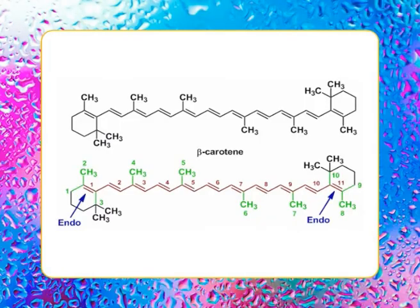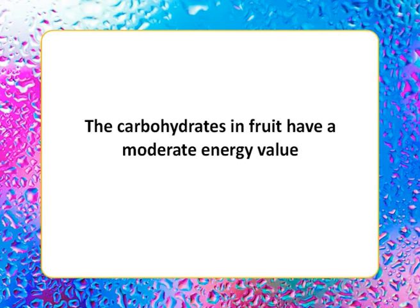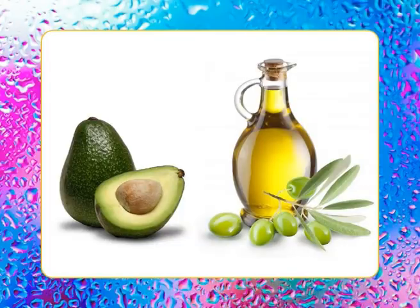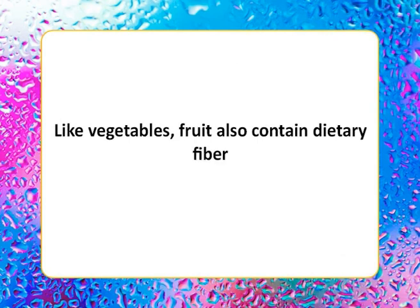Although most people do not consume an adequate amount of fruits and vegetables, in the United States more processed fruits and vegetables are consumed than their fresh counterparts. The primary source of vitamin A in fruits is in the form of its precursor beta-carotene. The carbohydrates in fruits have a moderate energy value. Fruits contain protective vitamins, minerals, and dietary fiber but very little protein. They are practically fat-free except for avocado and olive, both of which contain up to 15% fat. Like vegetables, fruits also contain dietary fiber.